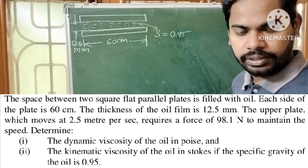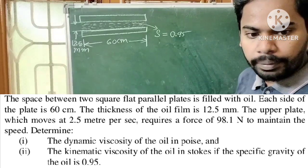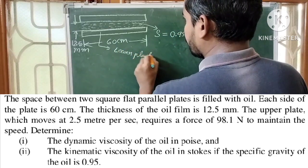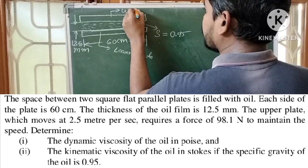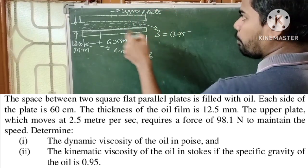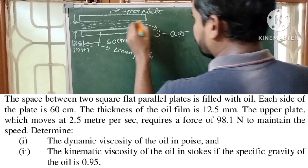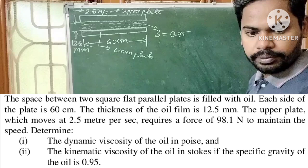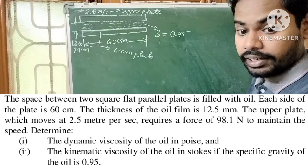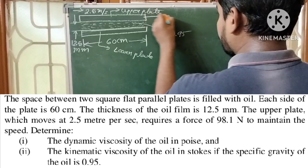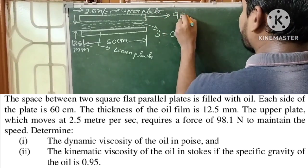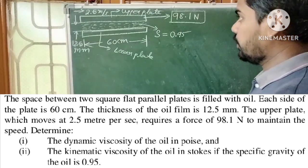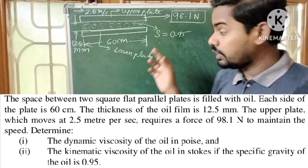The lower plate is fixed and the upper plate is moving with a velocity of 2.5 meters per second. To maintain this velocity, we need to apply a force of 98.1 Newtons. This is actually a shear force — it acts tangential to the body.